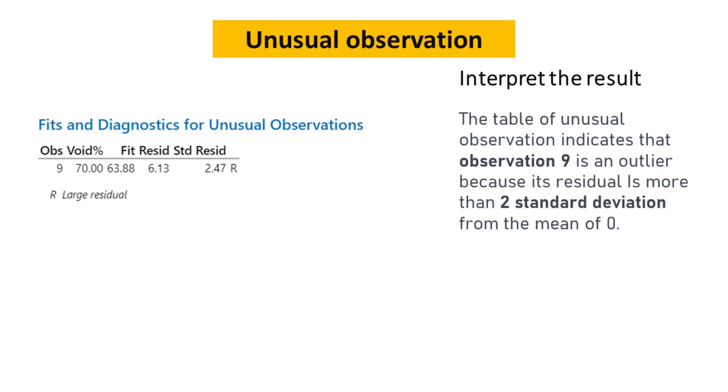The table of unusual observations indicates that observation 9 is an outlier because its residual is more than 2 standard deviations from the mean of 0.